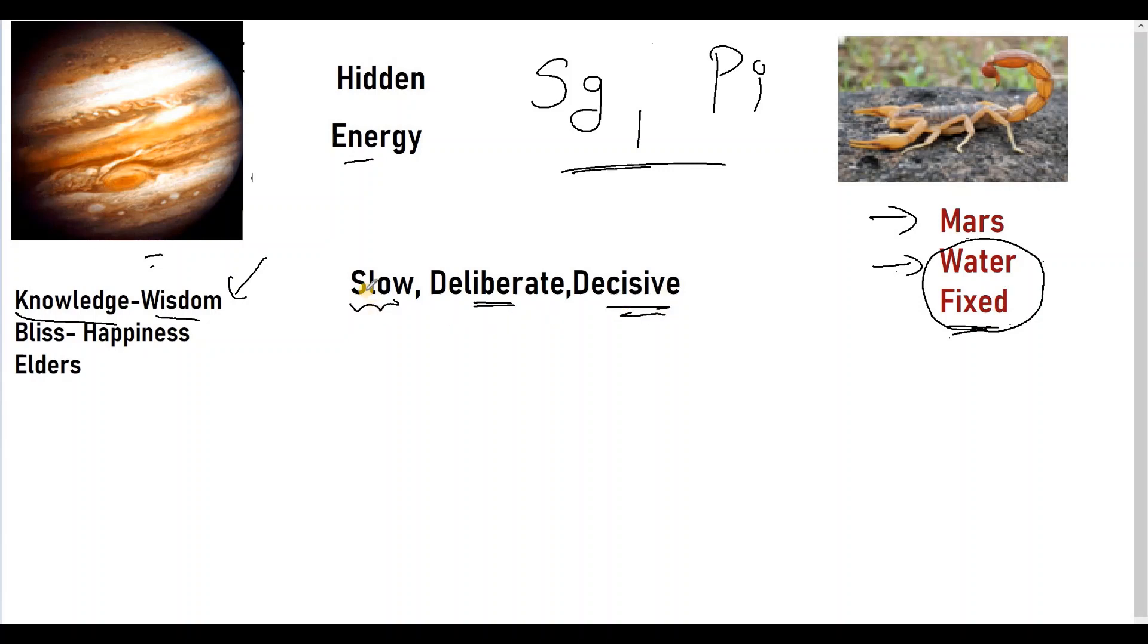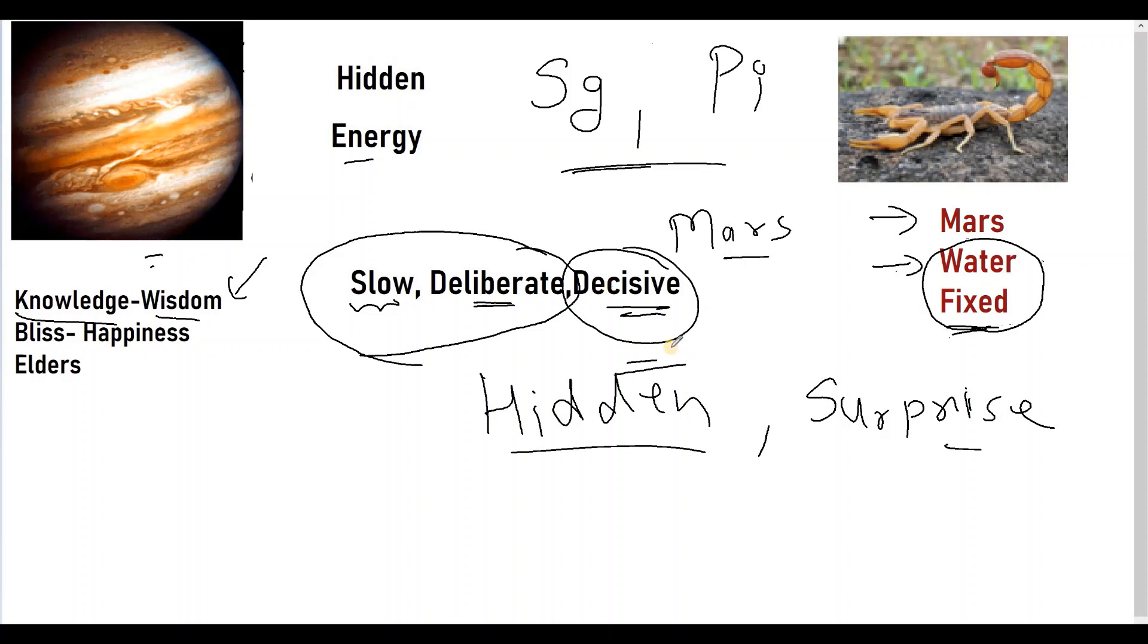See they will be slow and deliberate but yet very decisive because it is ruled by Mars. Mars is not a planet which likes dilly dallying. Mars is decisive. But the great thing is when they are in this first two stages of being slow and thinking about it, deliberating, people around them won't even have a whiff of what they are trying to do. So basically there is a great hidden aspect in the way they act. So much so that it can surprise many people even their friends and family because of their sudden decisive actions. So the actions seem sudden but they are not actually, they have been ruminating about them for long.